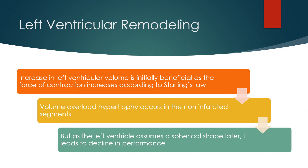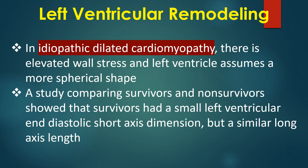Volume overload hypertrophy occurs in the non-infarcted segments. But as the left ventricle assumes a spherical shape later, it leads to decline in performance. In idiopathic dilated cardiomyopathy, there is elevated wall stress and the left ventricle assumes a more spherical shape.